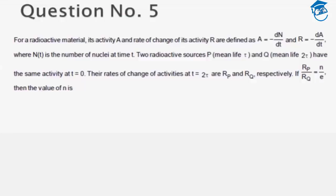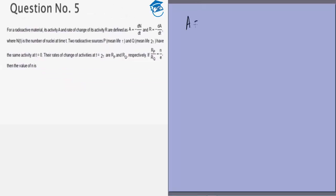This is a question on radioactivity. We are given that the activity and rate of change of activity are defined as: activity A equals minus dn by dt, which actually equals minus n0 e to the power minus t by tau, where tau is the average lifetime. In the second case we are given R, which is a new quantity, rate of change of activity, defined as minus dA by dt.